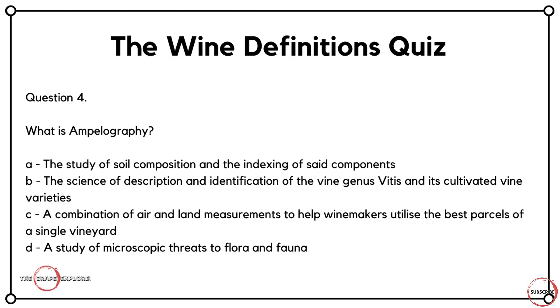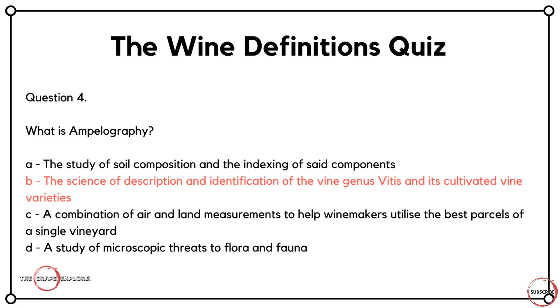Question four, staying on the theme of very technical scientific words: What is ampullography? Is it A, the study of soil composition and the indexing of said components? Is it B, the science of description and identification of the vine genus Vitus and its cultivated vine varieties? Is it C, a combination of air and land measurements to help the winemaker utilise the best parcels of a single vineyard? Or is it D, a study of microscopic threats to flora and fauna? This is what I mean by really needing to know your wine words. I'd never heard of this until I started writing this quiz. The correct answer is B — it's the science of description and identification of the vine genus Vitus and its various varieties.